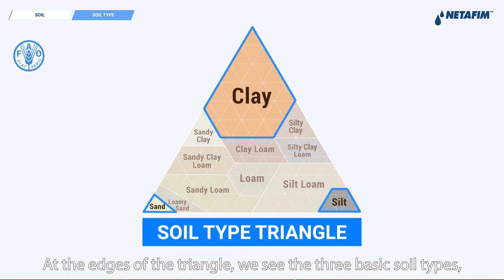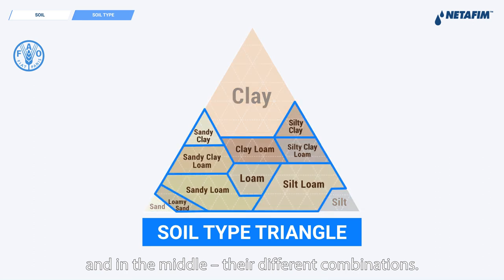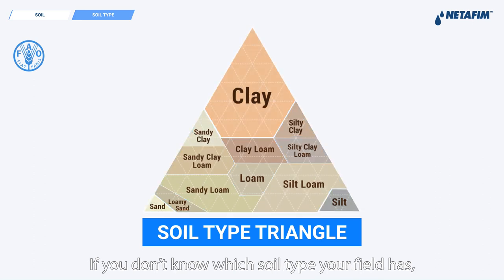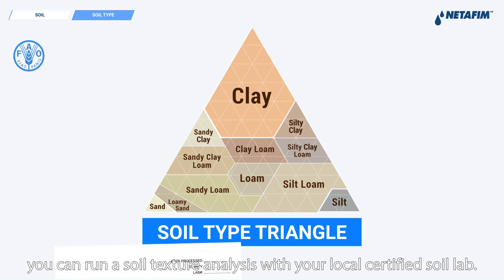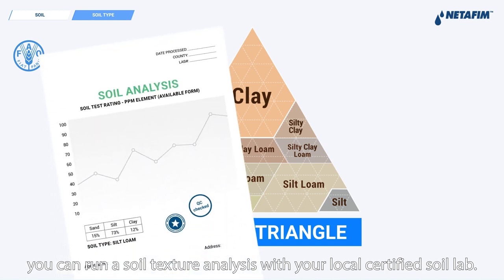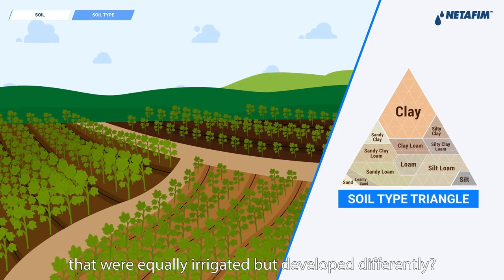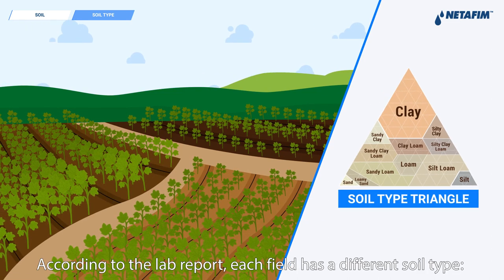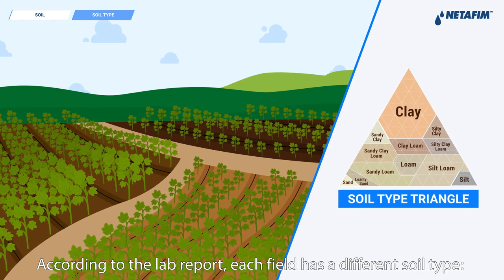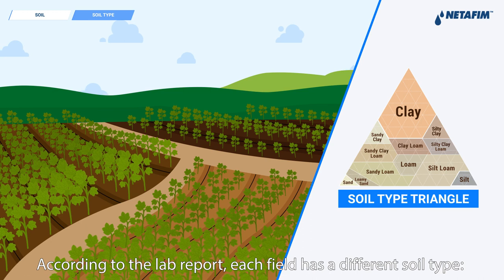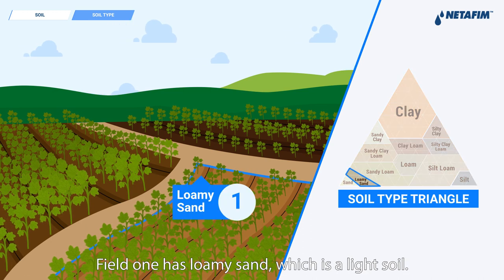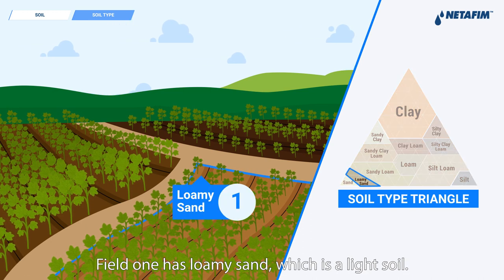The FAO classification includes 12 soil types represented in the soil type triangle. At the edge of the triangle we see the three basic soil types, and in the middle their different combinations. If you don't know which soil type your field has, you can run a soil texture analysis with your local certified soil lab. According to the lab report, field one has loamy sand, which is a light soil.